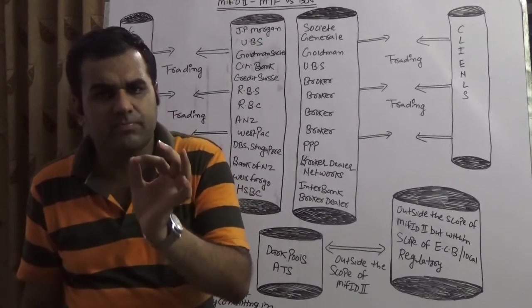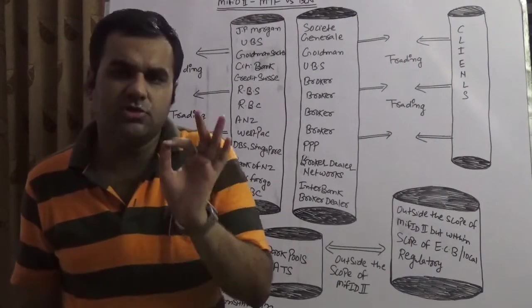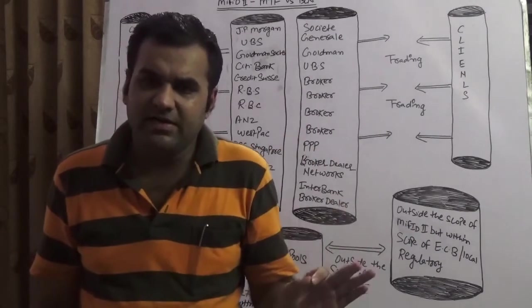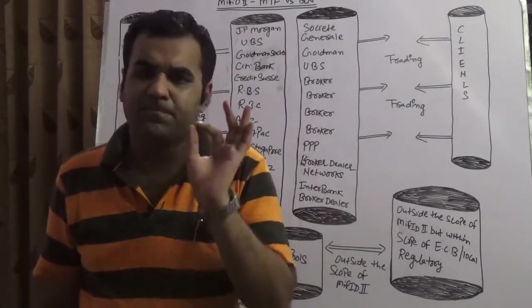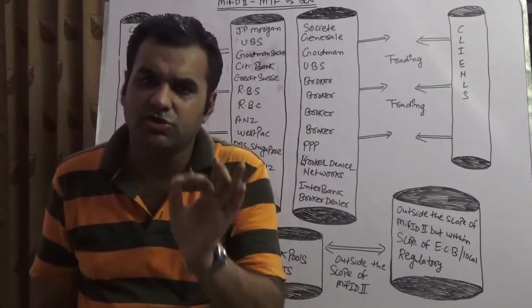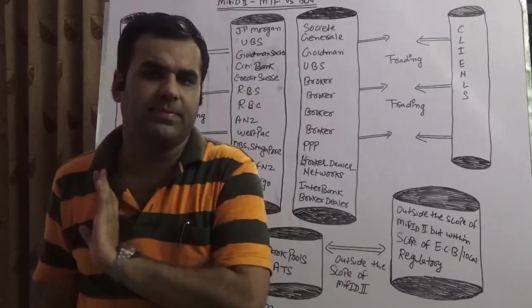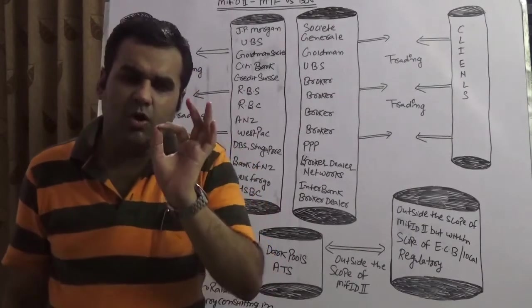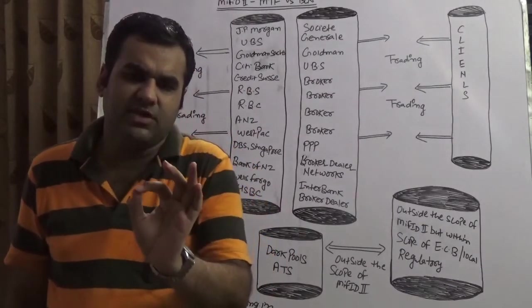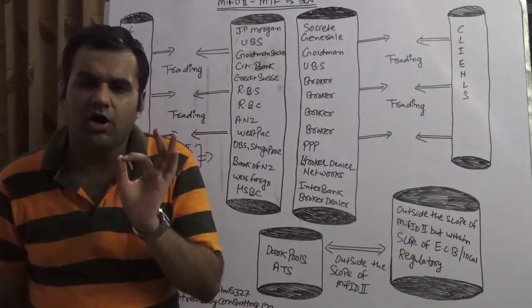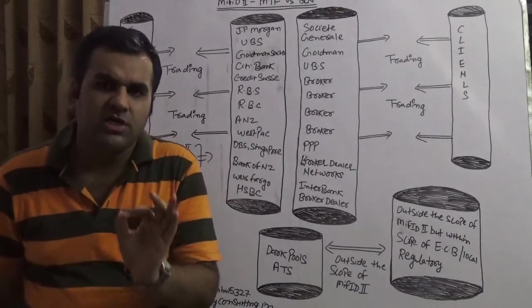The only difference which is left between non-MTF and BCN is the prop capital. Because non-MTF do not support, whether it's an MTF multilateral trading facility or non-MTF non-multilateral trading facility, both do not support prop capital while BCN supports prop capital. This is the only line of difference which we have today.